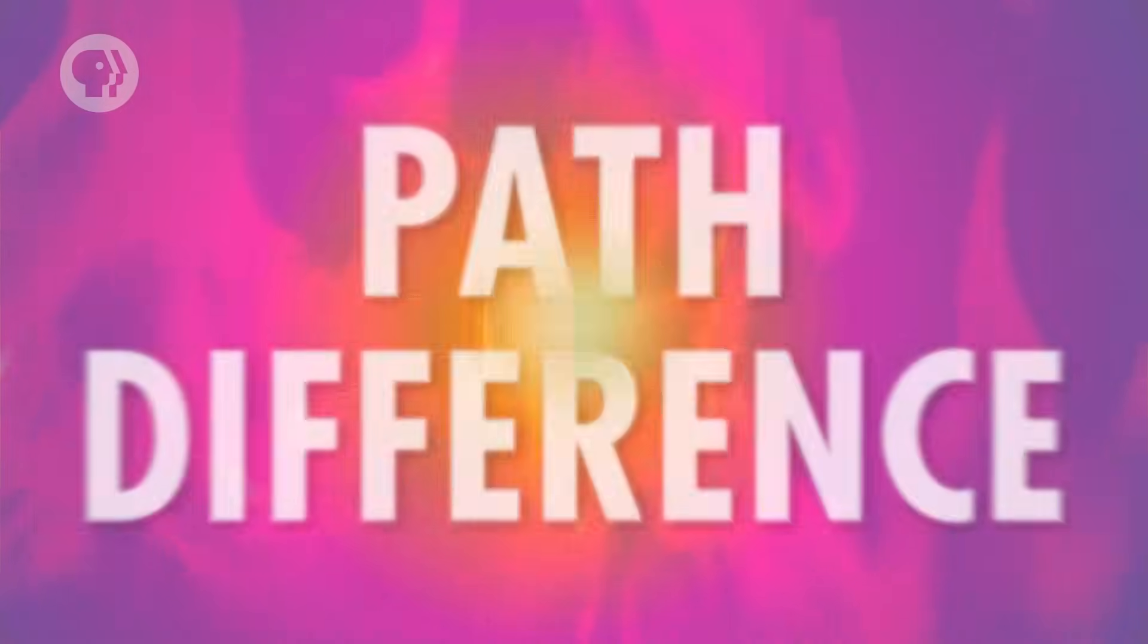Light waves interfere constructively when they're lined up exactly right. For example, to form that line on the screen between the two slits, the waves from each slit travel exactly the same distance. So they line up, interfere constructively, which increases their amplitude to create a bright spot. But in other places on the screen, there's a difference between the distances traveled by each wave. This is called the path difference.